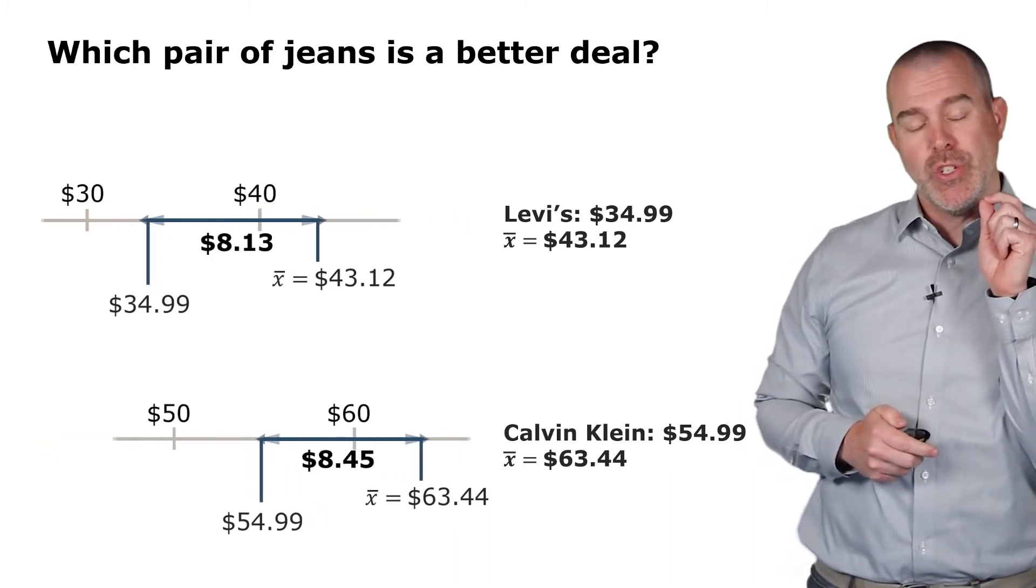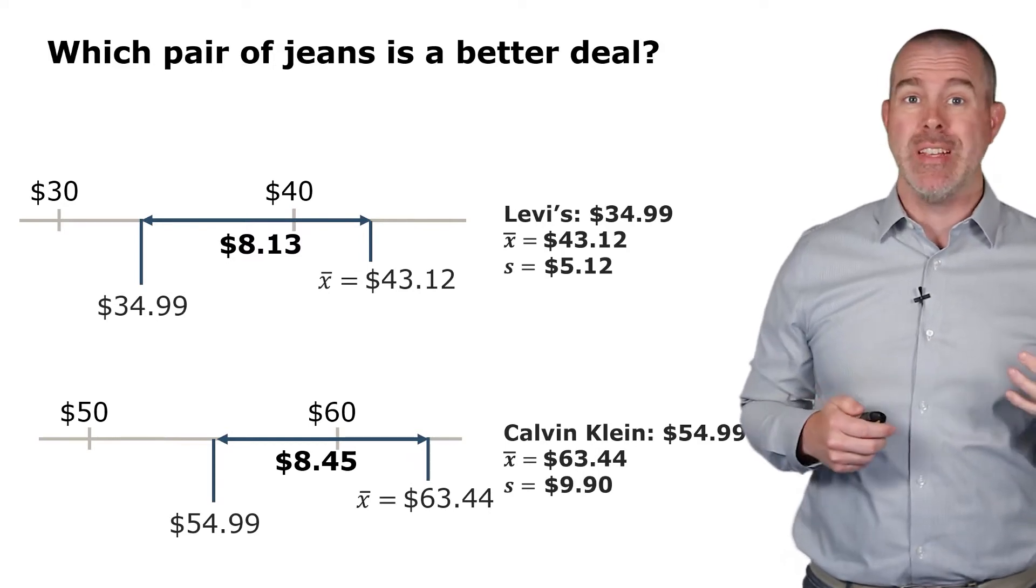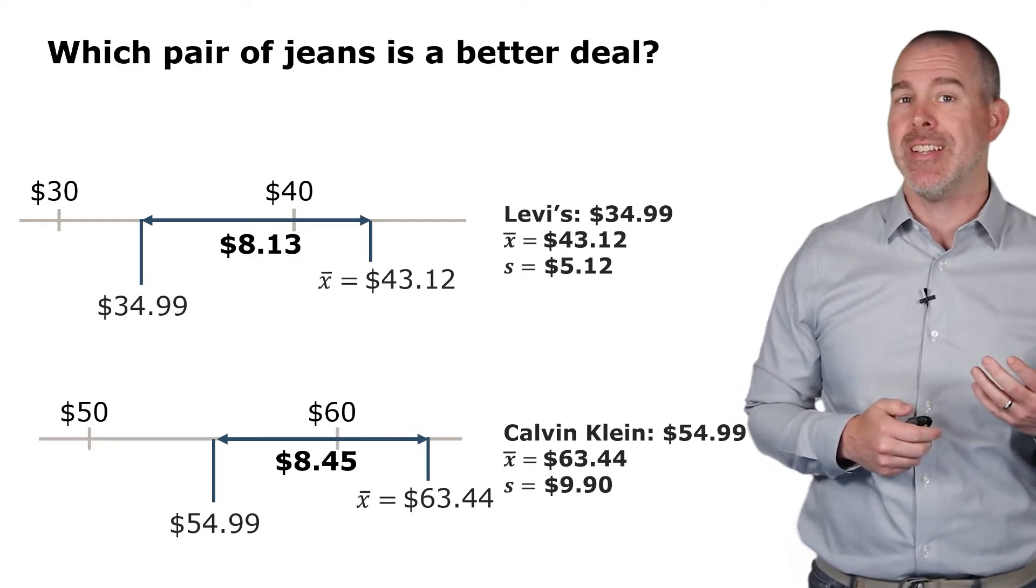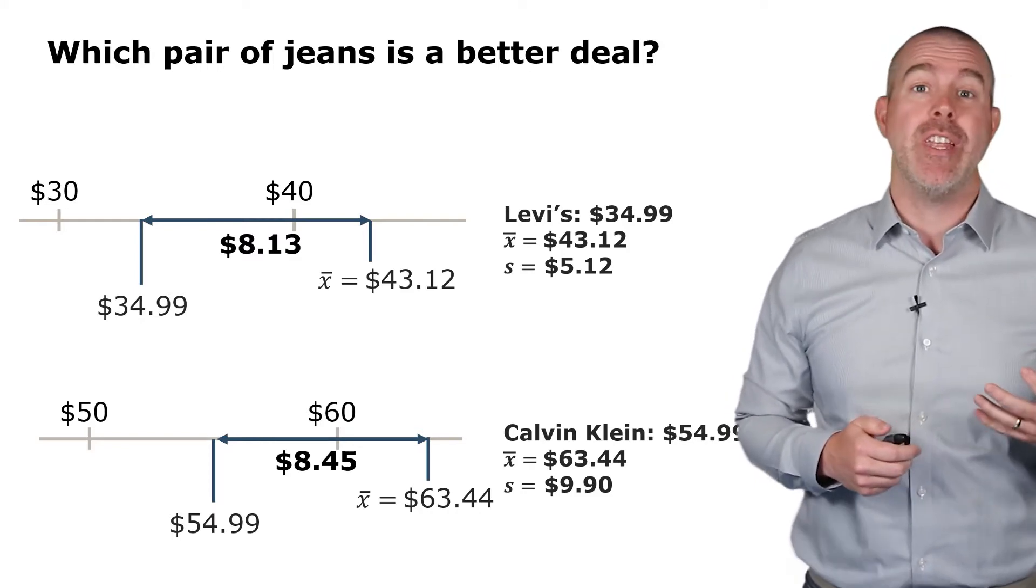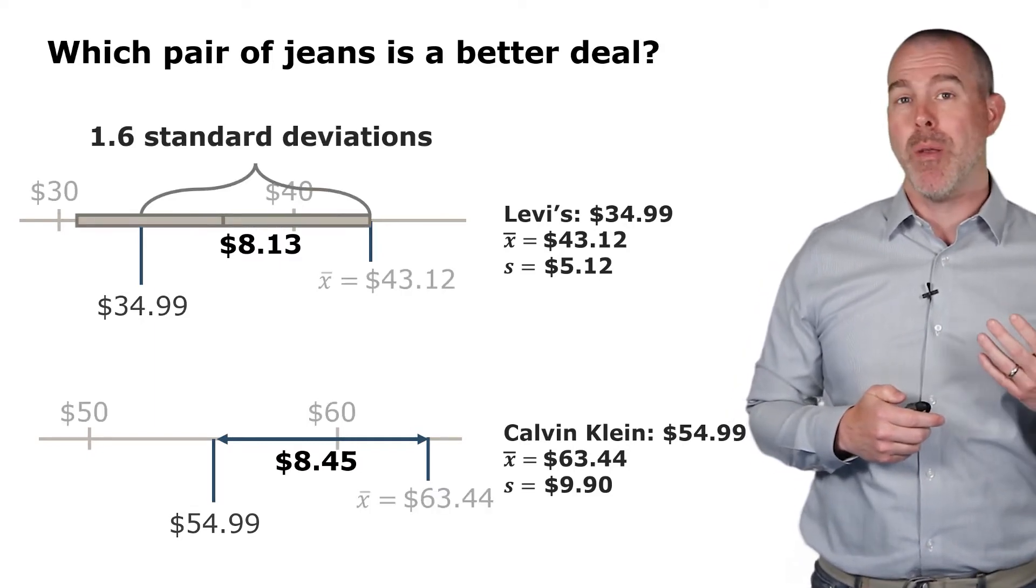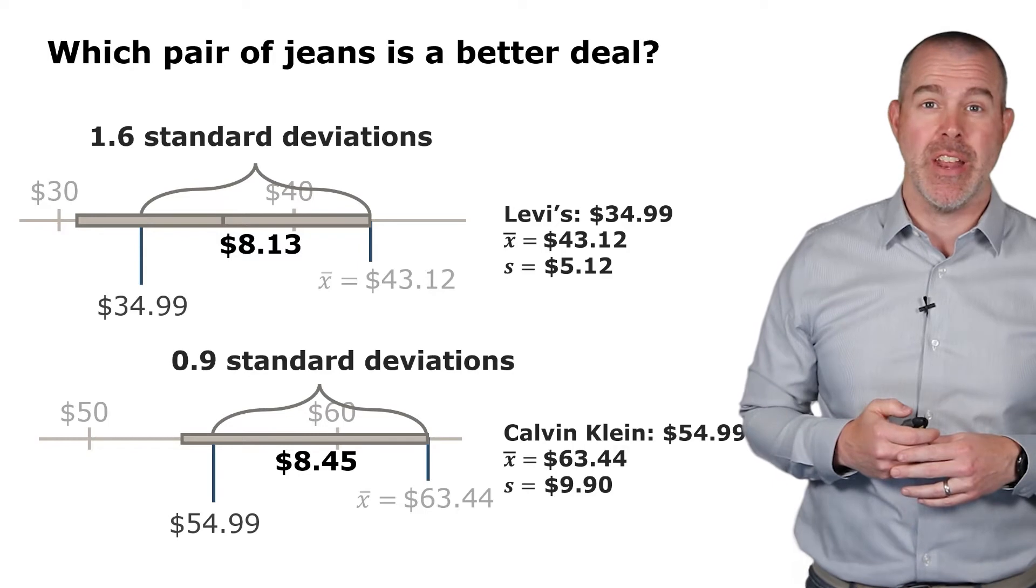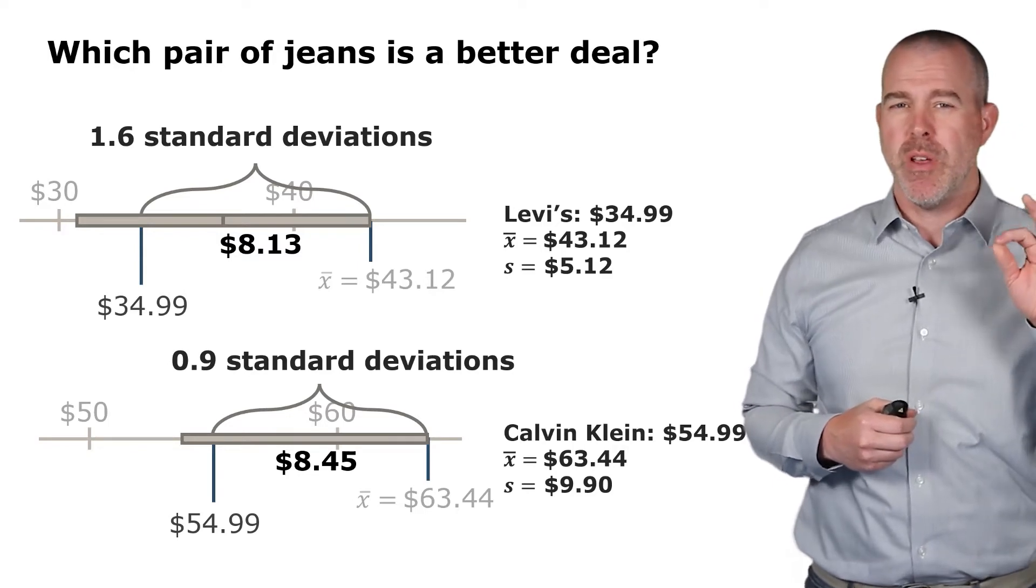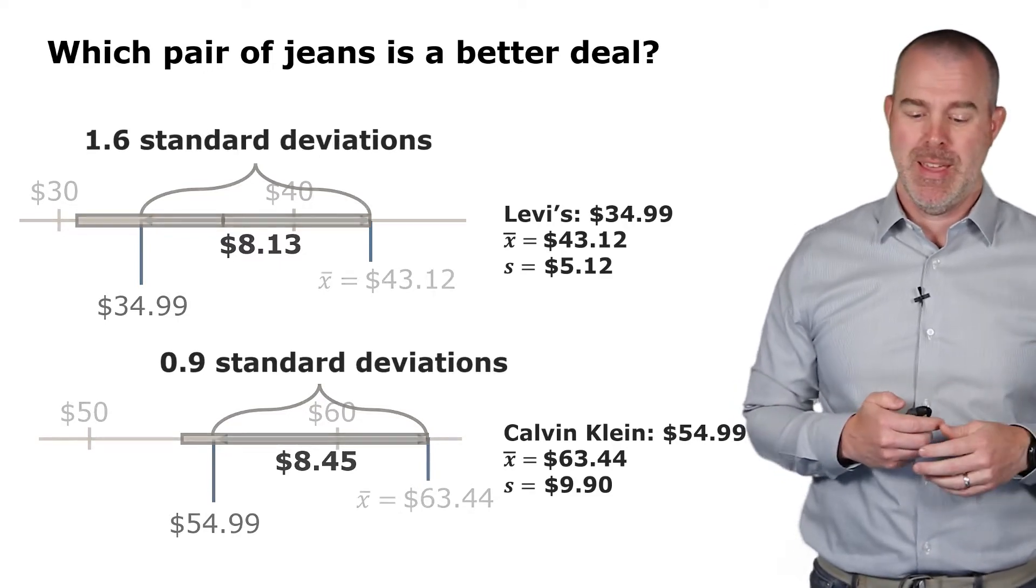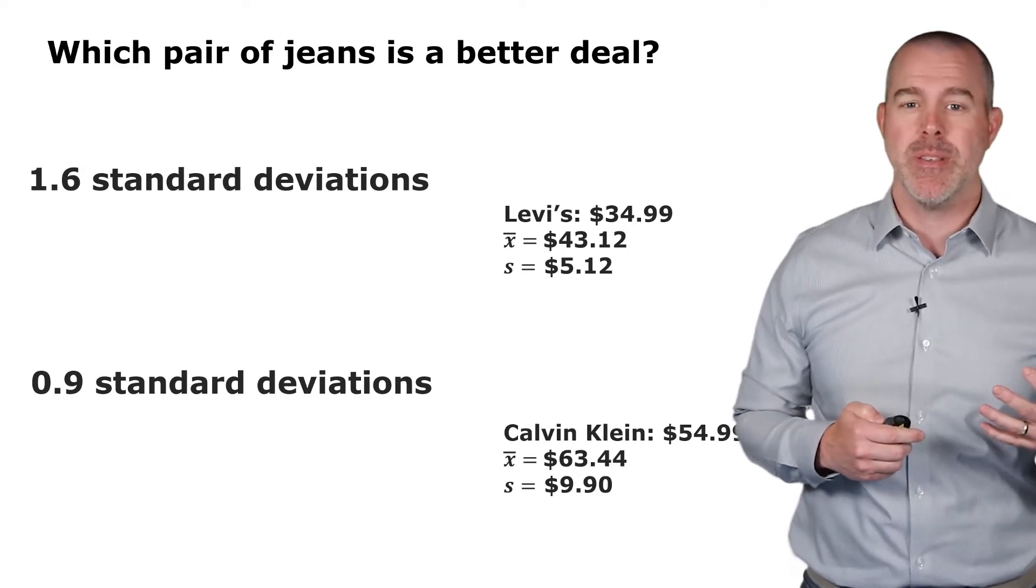Let's dive in a little bit deeper and focus just on that difference from the mean. Suppose they have a different spread. Say the standard deviation of Levi's is $5.12, Calvin Klein $9.90. Now if we say, how many standard deviations are they below the mean? The Levi's one is about 1.6 standard deviations below the mean, where the Calvin Klein is only nine-tenths of a standard deviation. This is the first measure of position we're going to talk about: the number of standard deviations from the mean.